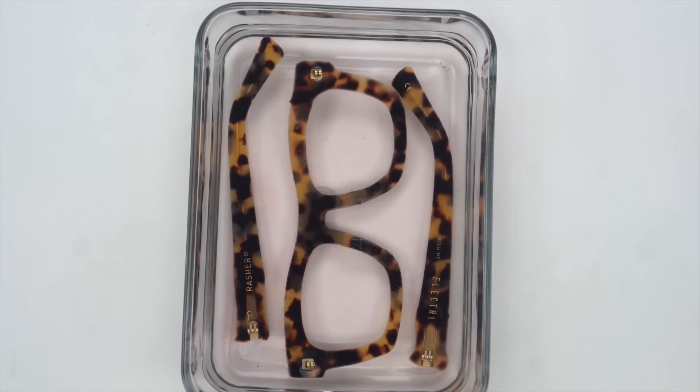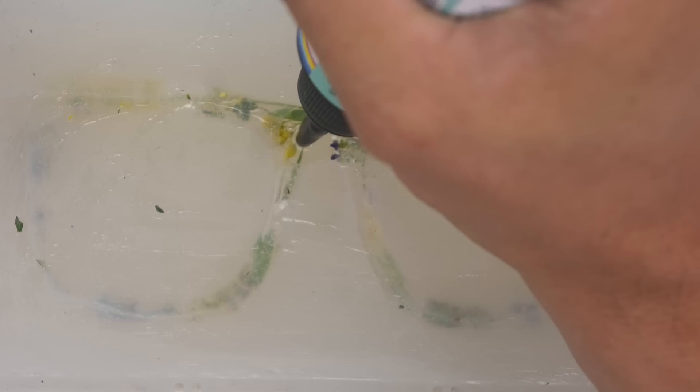So I got a couple really nice Electric glasses and I took them apart. One of them I put in acetone and melted them, and the second one we actually made a mold out of them so that we can fill it up with some pressed flowers to make some pretty rad glasses.